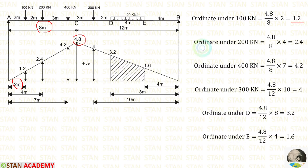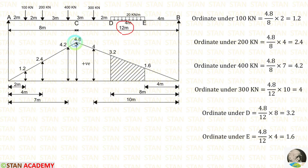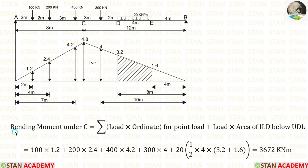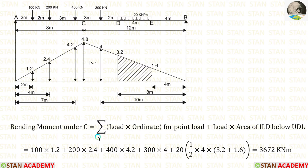For 2 m, we are getting 1.2. In the same way, we can calculate the ordinate under the 200 kN and under the 400 kN loads. For 12 m it is 4.8, but for 10 m we are getting 4.0. In the same way, we can calculate the ordinate under point D and under point E. Now, let us calculate the bending moment under C. For the point loads, we have to multiply the load with the ordinate.